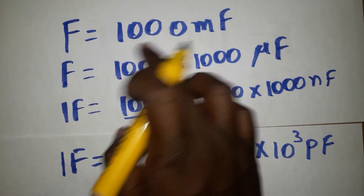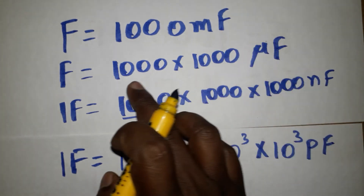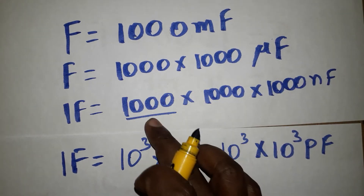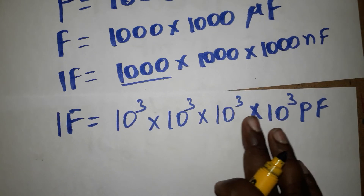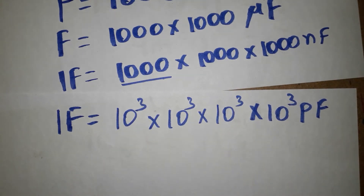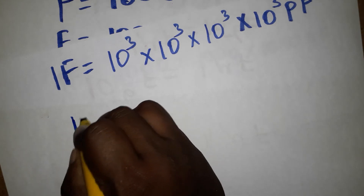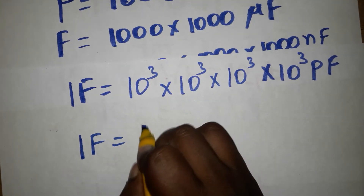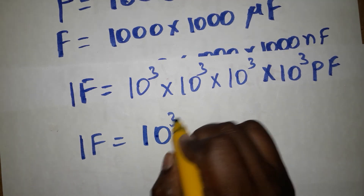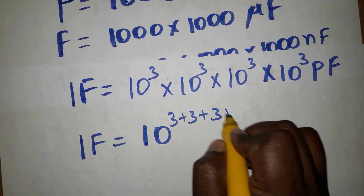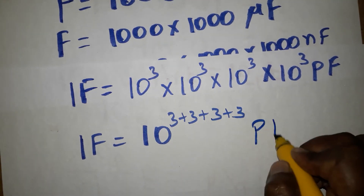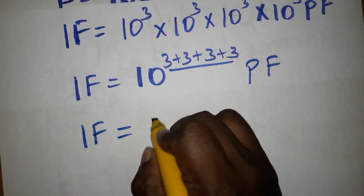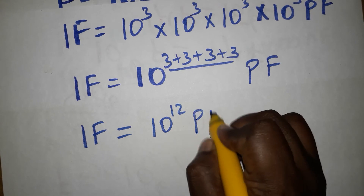So: 3 zeros is milli, 6 zeros is micro, 9 zeros is nano, and 12 zeros is picofarad. So 1 farad is equal to 10^(3+3+3+3), which is 10^12. Therefore, 1 farad is equal to 10^12 picofarads.